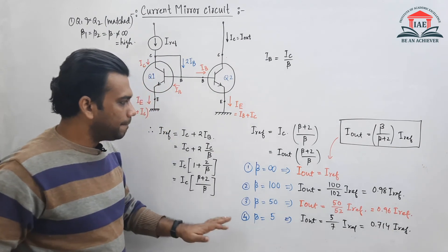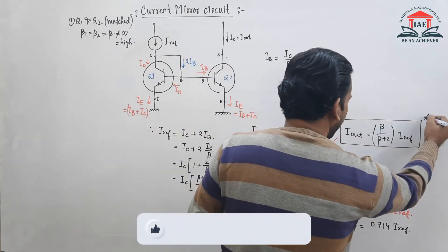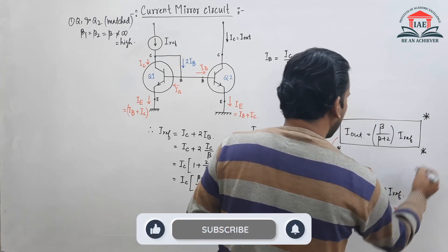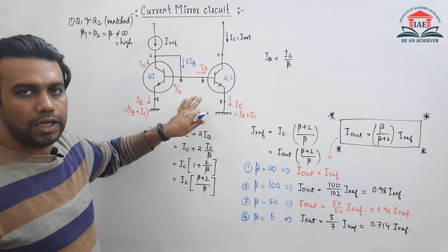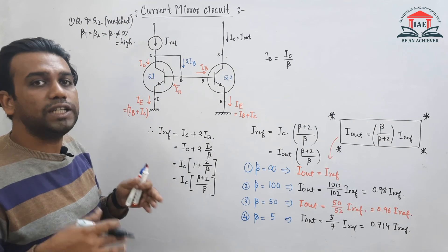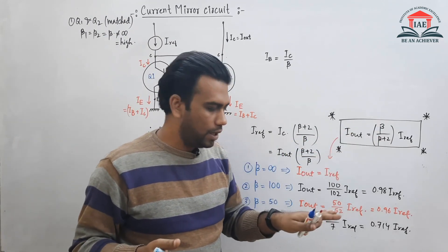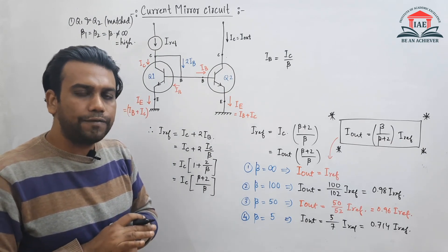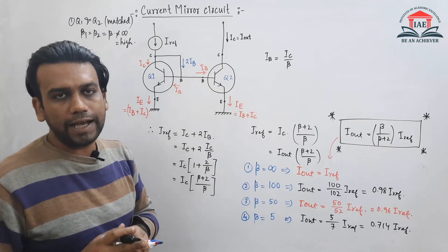So the formula I_out = (β / (β + 2)) × I_reference is the general expression for the output current of a current mirror circuit when the beta value is not infinite. In this way we can calculate the output current for any finite beta value.